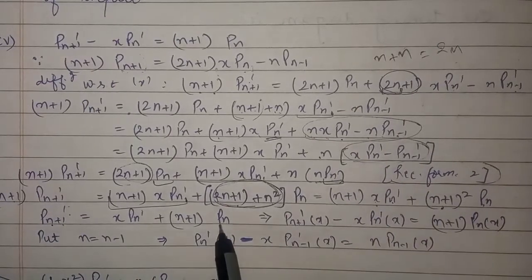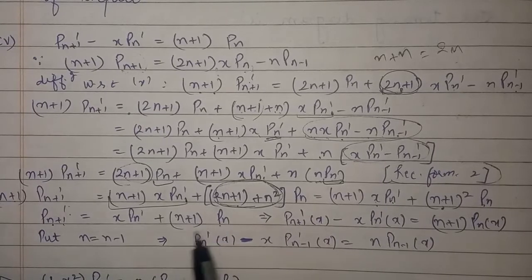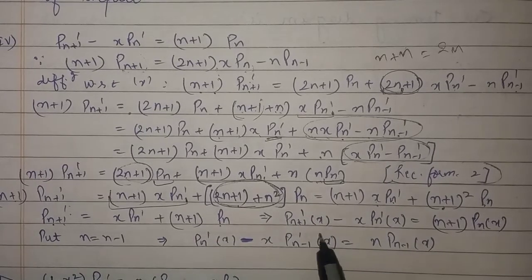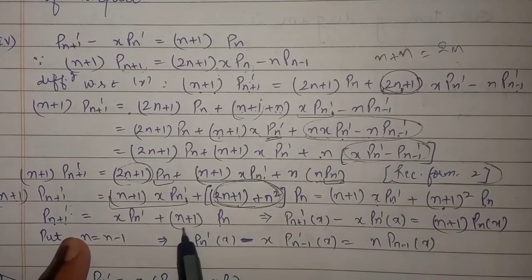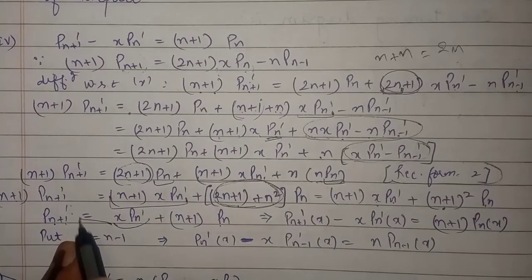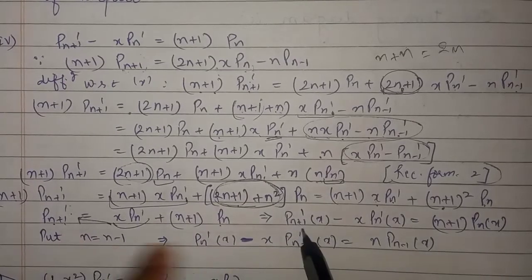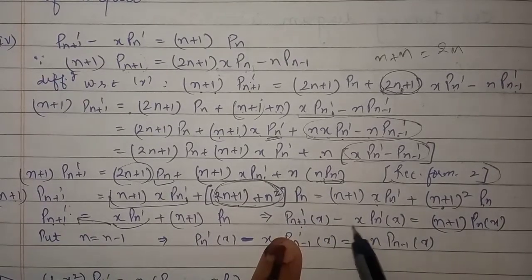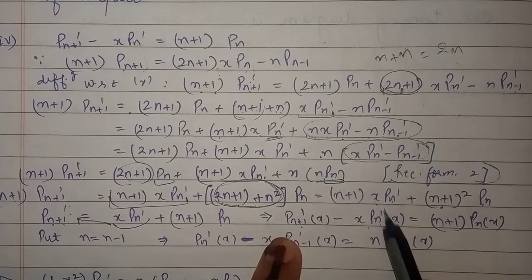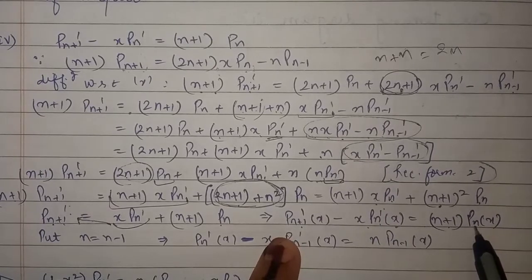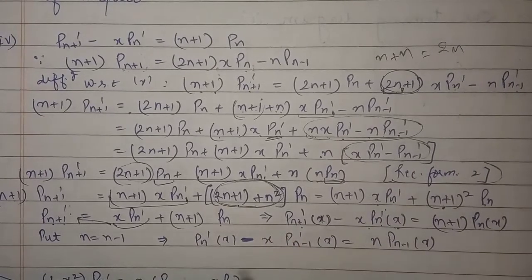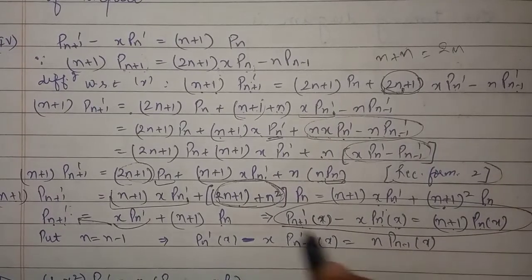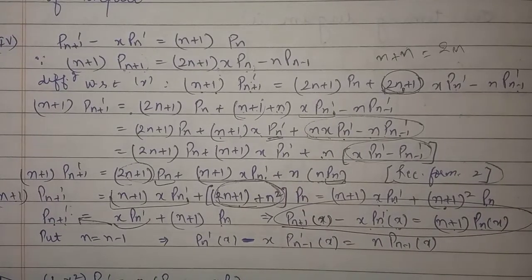After dividing by (n+1) we get P'(n+1) equals x·P'(n) plus (n+1)·P(n). On rearranging, taking the x·P'(n) term to the left-hand side, we get P'(n+1) - x·P'(n) = (n+1)·P(n). This equation is recurrence formula number four.